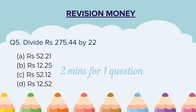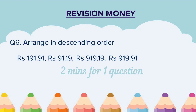Question 5: Divide rupees 275.44 by 22. Four options are given — select the correct answer. Question 6: Arrange in descending order. Four numbers in rupees format are given. You will arrange them in descending order. Descending order means from the bigger number to the smaller number.